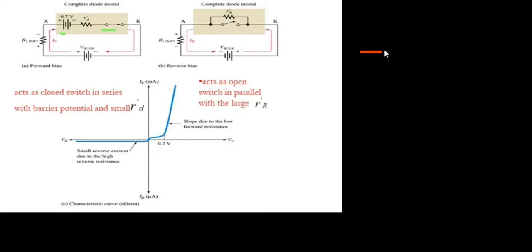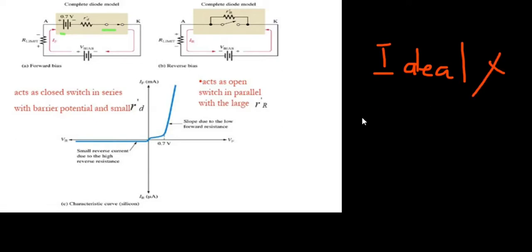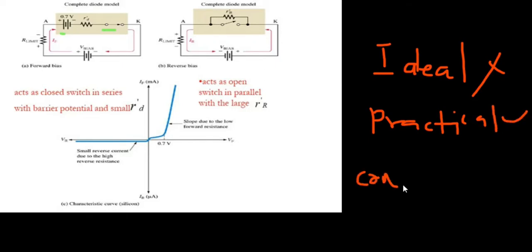In summary: for the ideal diode, we don't include the biopotential. For the practical diode, we include only the biopotential. For the complete diode, we include the biopotential, the forward resistance, and the reverse resistance. That's what you should know about the three diode models.